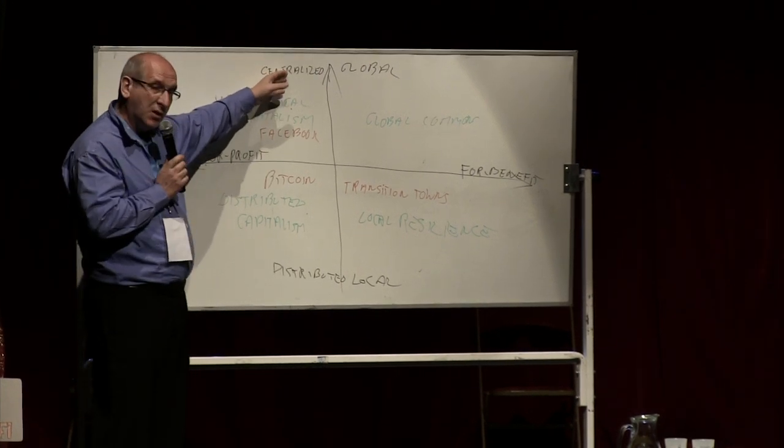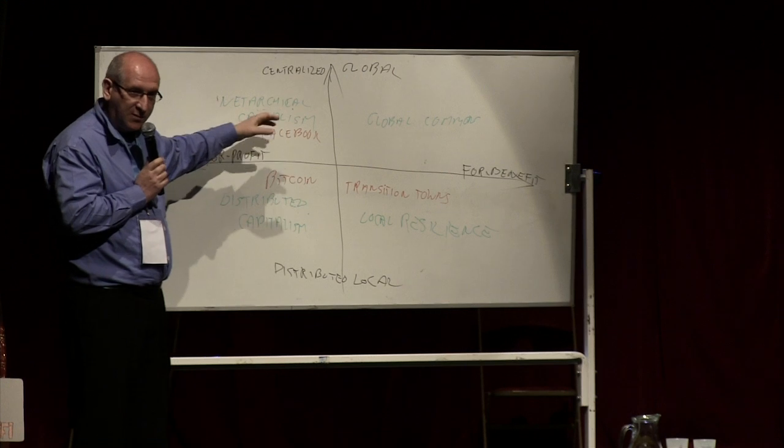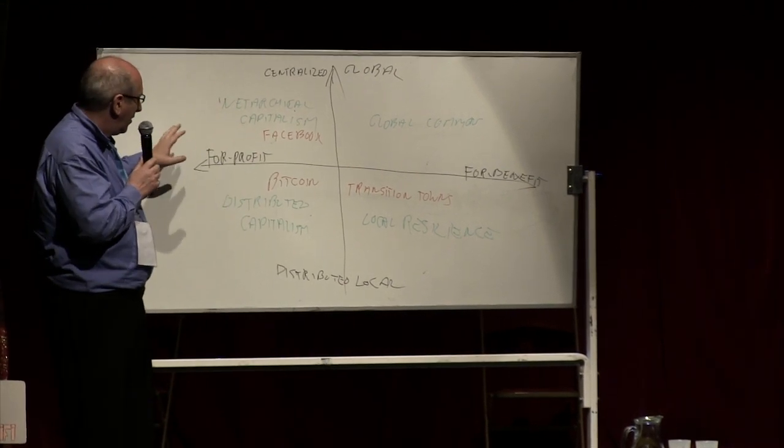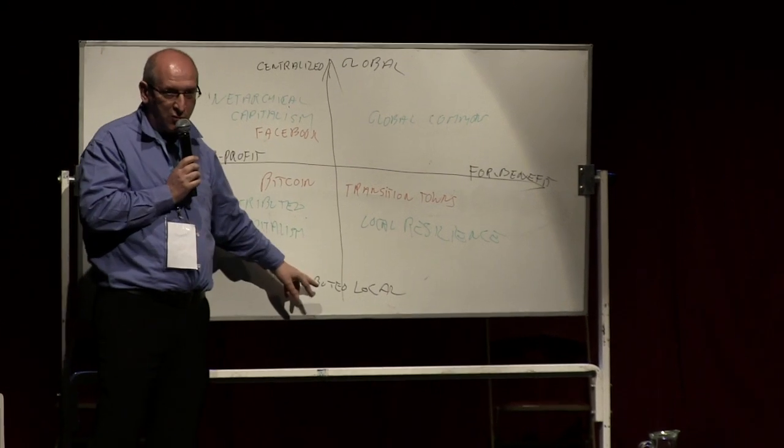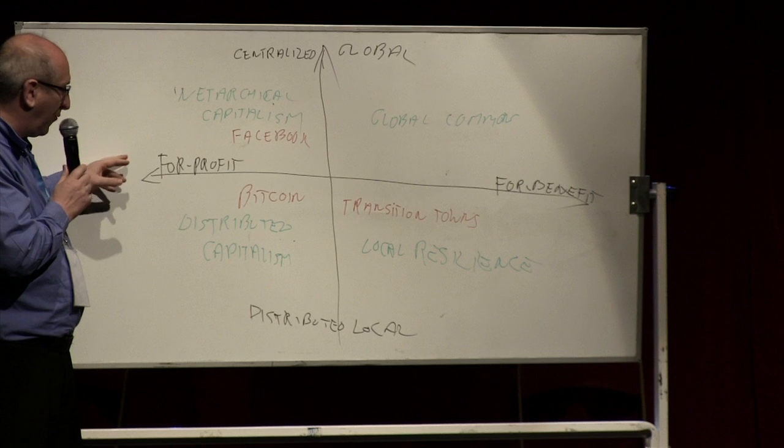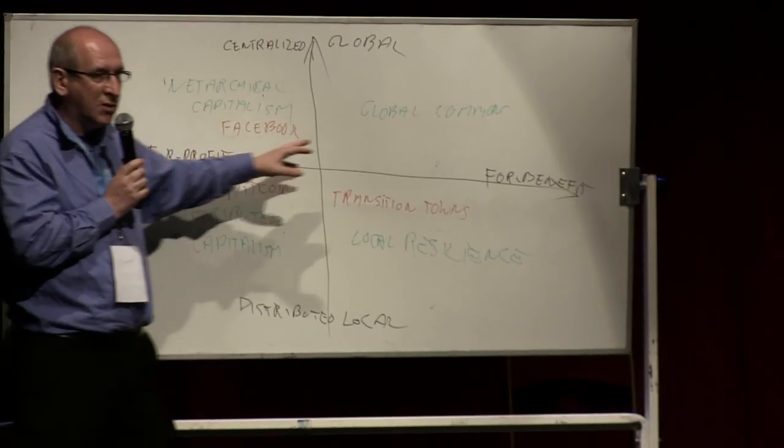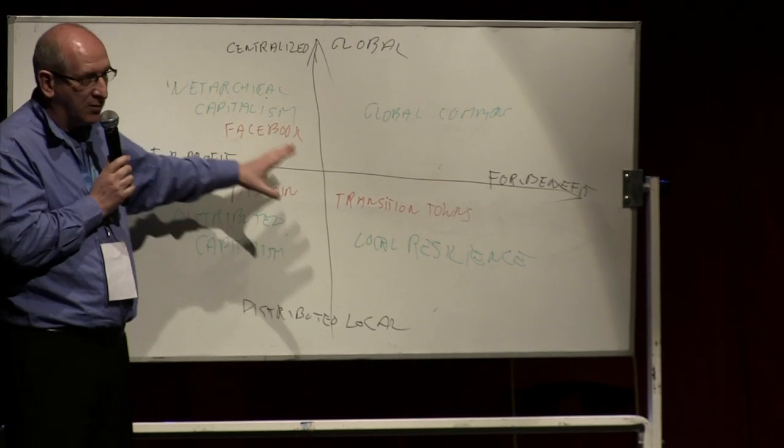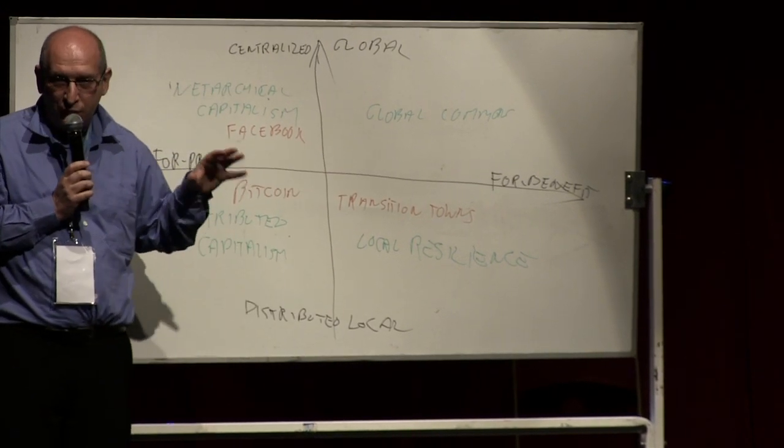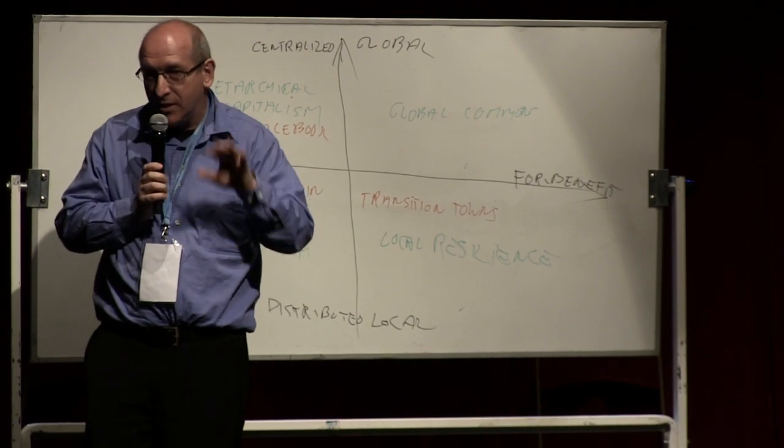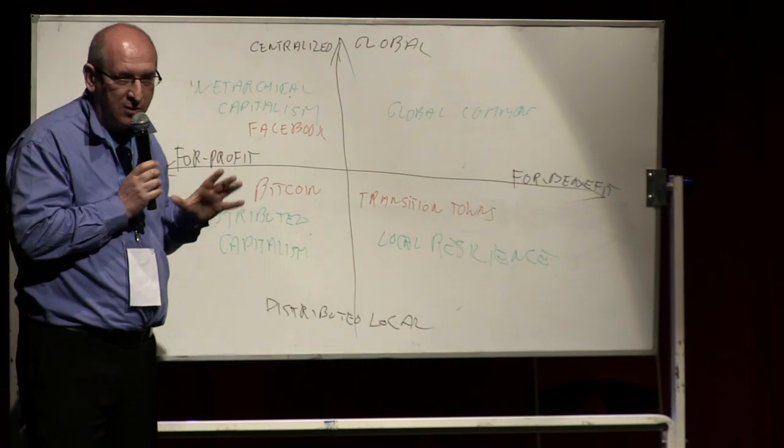You have centralized control of peer-to-peer systems. Sounds a bit contradictory, but it's not really. You have distributed control of peer-to-peer systems. You can do this with a for-profit orientation, and you can do this with a for-benefit orientation. So with those four quadrants, we already have four different futures, but they're actually four different presents. They exist today. All of them are being done today.